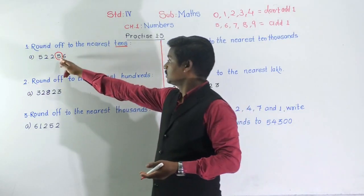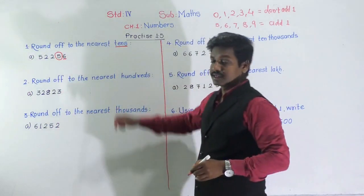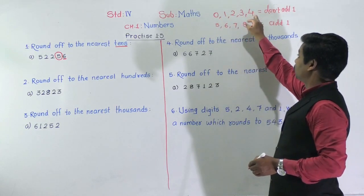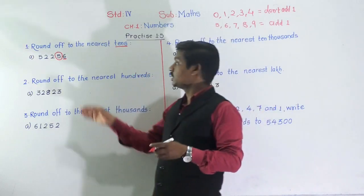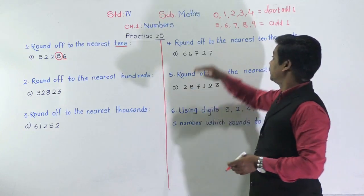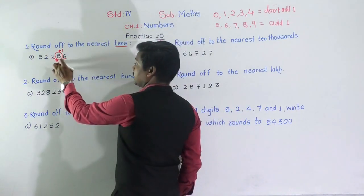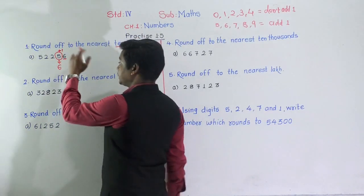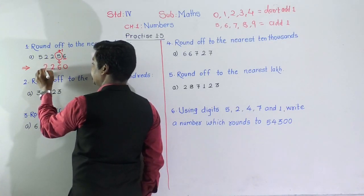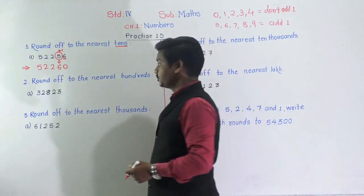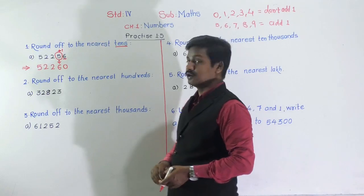Since the next digit is 6, it comes in our second rule: if the next digit is 5, 6, 7, 8, or 9, add 1 to the tens place digit. So 5 plus 1 equals 6. For the next digit, write 0. The digits before are taken as they are. So 52,256 rounded to the nearest tens becomes 52,260. The second example in this question you have to solve as homework.